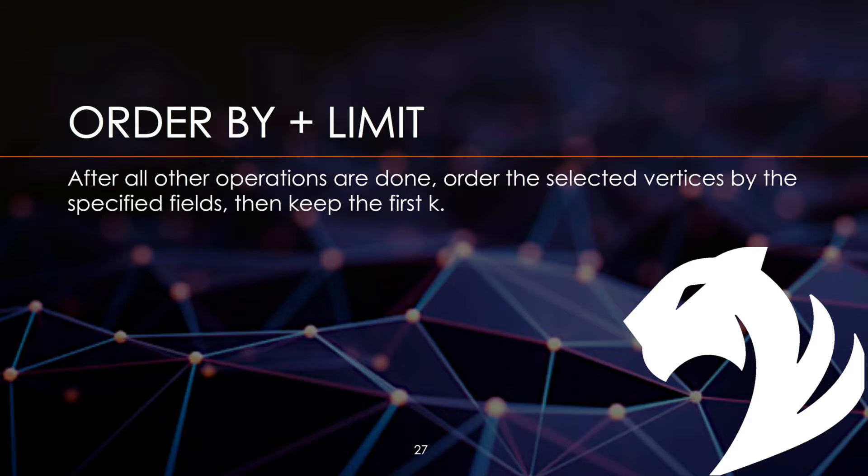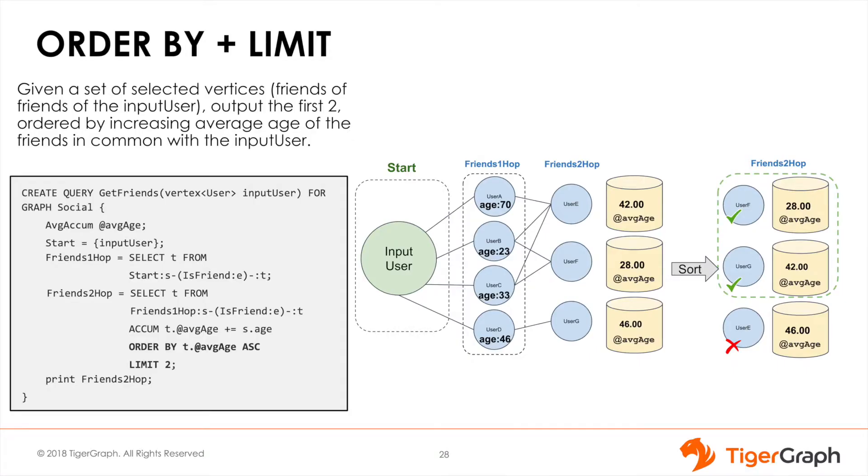For example, you can order by descending values and then limit by 5 to find the top 5 results of a specific value. The query we are showing here is the same as in the HAVING clause. We just exclude the HAVING clause here.